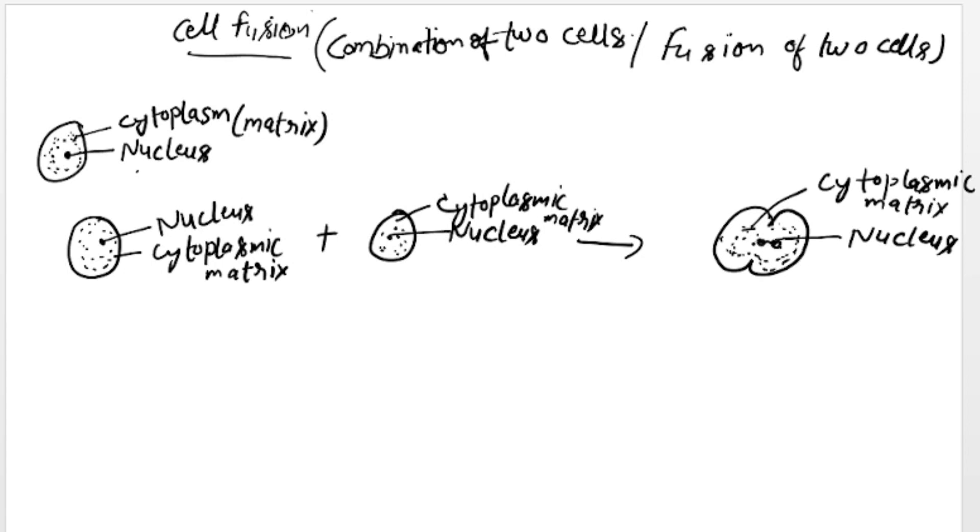When two cells combine and their nucleus are also combined, that nucleus is called dikaryon.